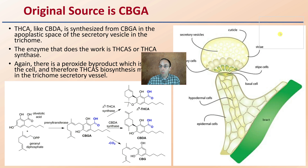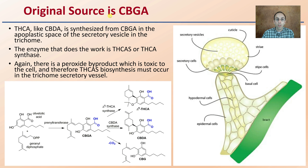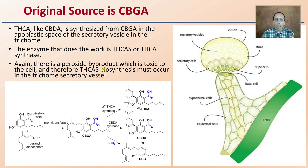The original source of THC is CBGA. THCA, like CBDA, is synthesized from CBGA in the apoplastic space of the secretory vesicle within the trichome structure. The enzyme that does the work is THCa synthase. There is a peroxide byproduct which is toxic to the cell; therefore, THCa synthase biosynthesis must occur within the secretory vesicle of the trichome.